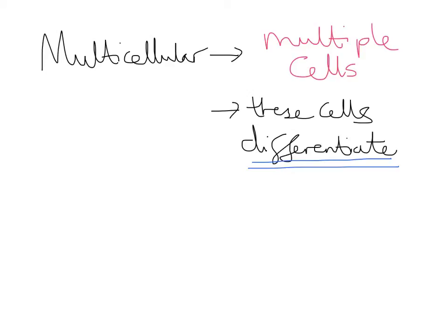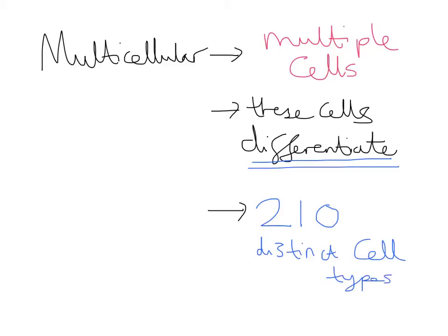In a video about stem cells, we talk about unspecialised cells, because that's what stem cells ultimately are, and how they lead into becoming differentiated cells. Multicellular organisms consist of multiple cells that differentiate and become specialised. As a bonus fact, there are in humans roughly about 210 distinct cell types. In school you learn about sperm, egg, muscle, heart, liver, kidney, red blood cell, white blood cell — but there are actually around 210 distinct cell types.